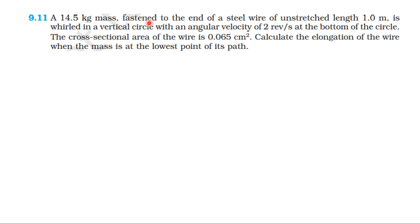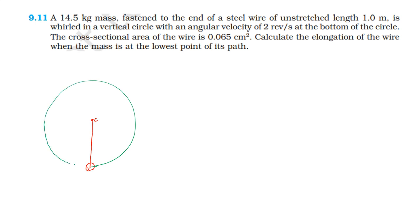Given: mass is 14.5 kg, steel wire of unstretched length 1 meter, rotating in a vertical circle with angular velocity of 2 rpm. The cross-sectional area of the wire is 0.065 cm². We need to find the elongation of the wire at the bottommost point.